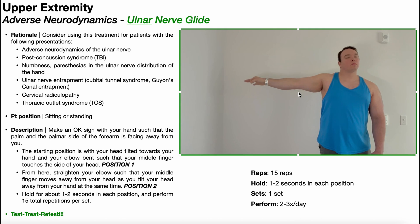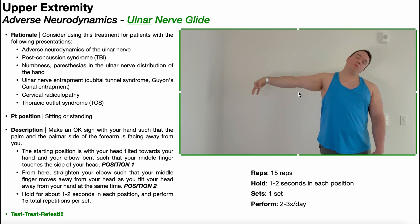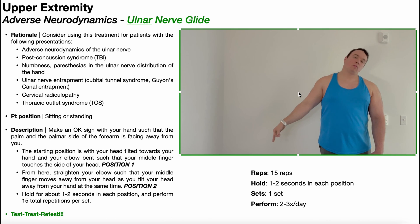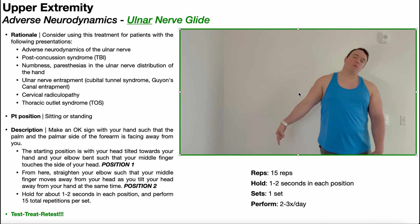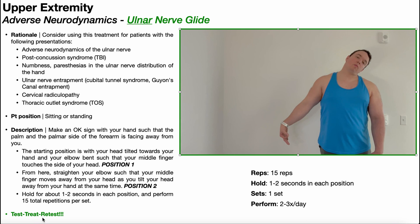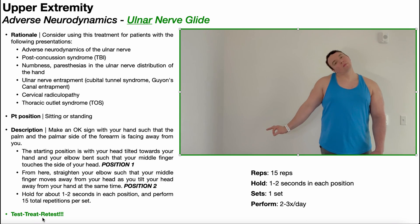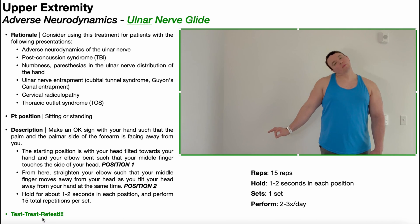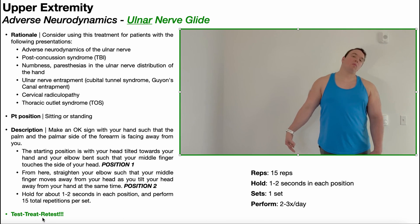This might be a little bit too intense for some people. So what you can always do is lower the arm into a little bit less abduction — this takes a little bit of the tension away, and you can still glide in this position. Always follow the test-treat-retest model: if you performed an ulnar nerve tension test and it was positive, give this treatment, then retest on that ulnar nerve tension test.